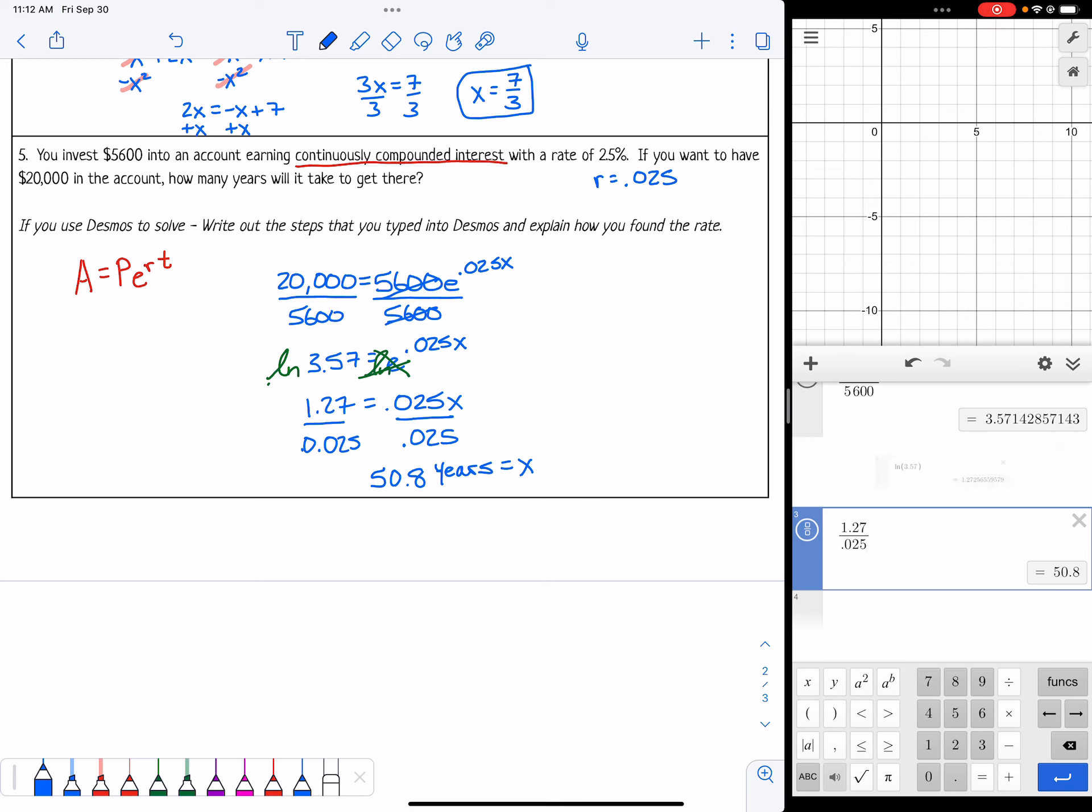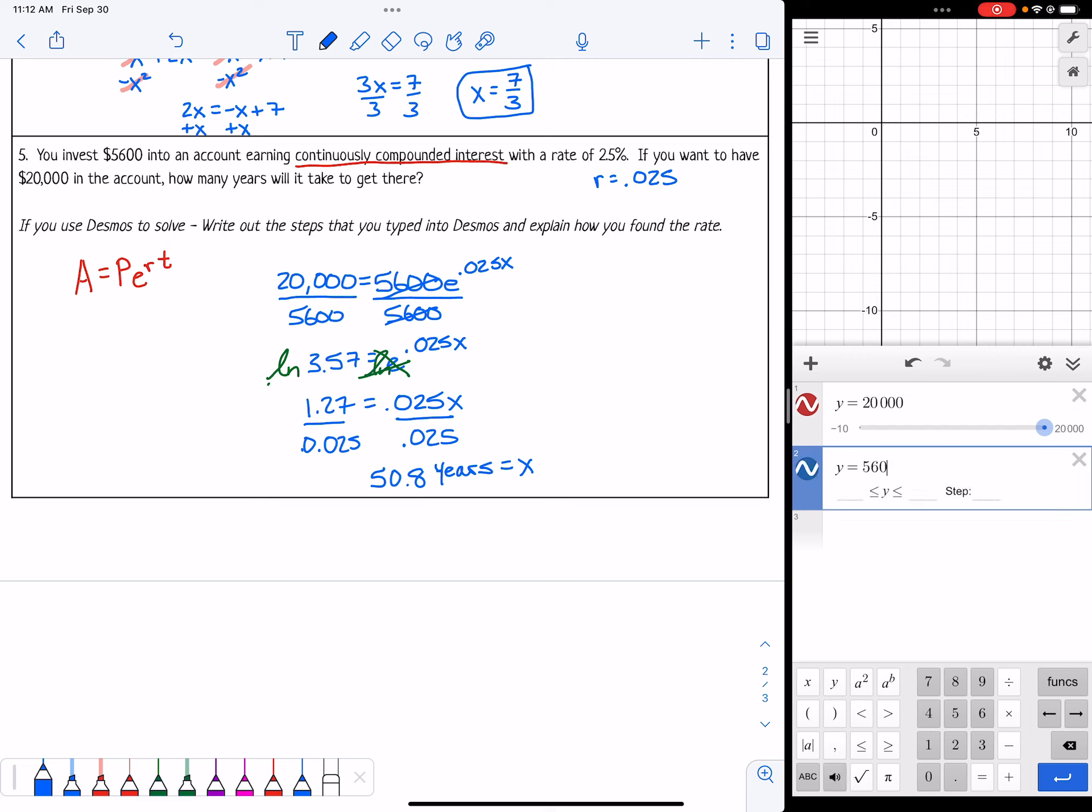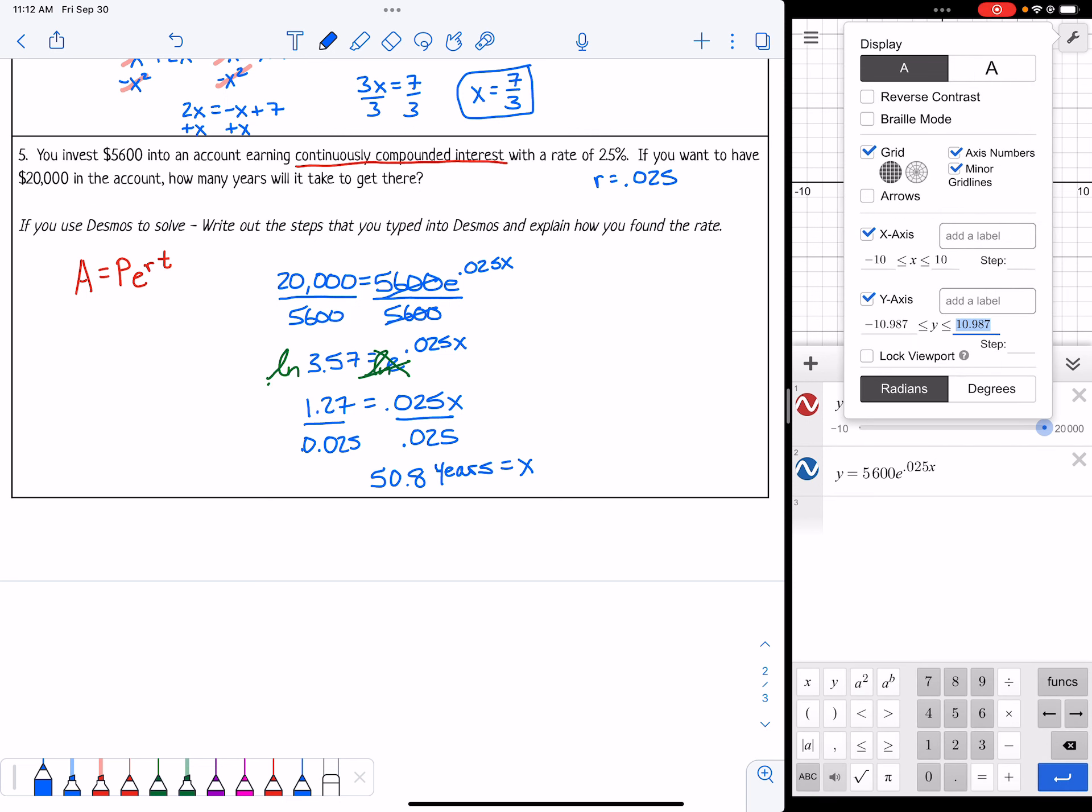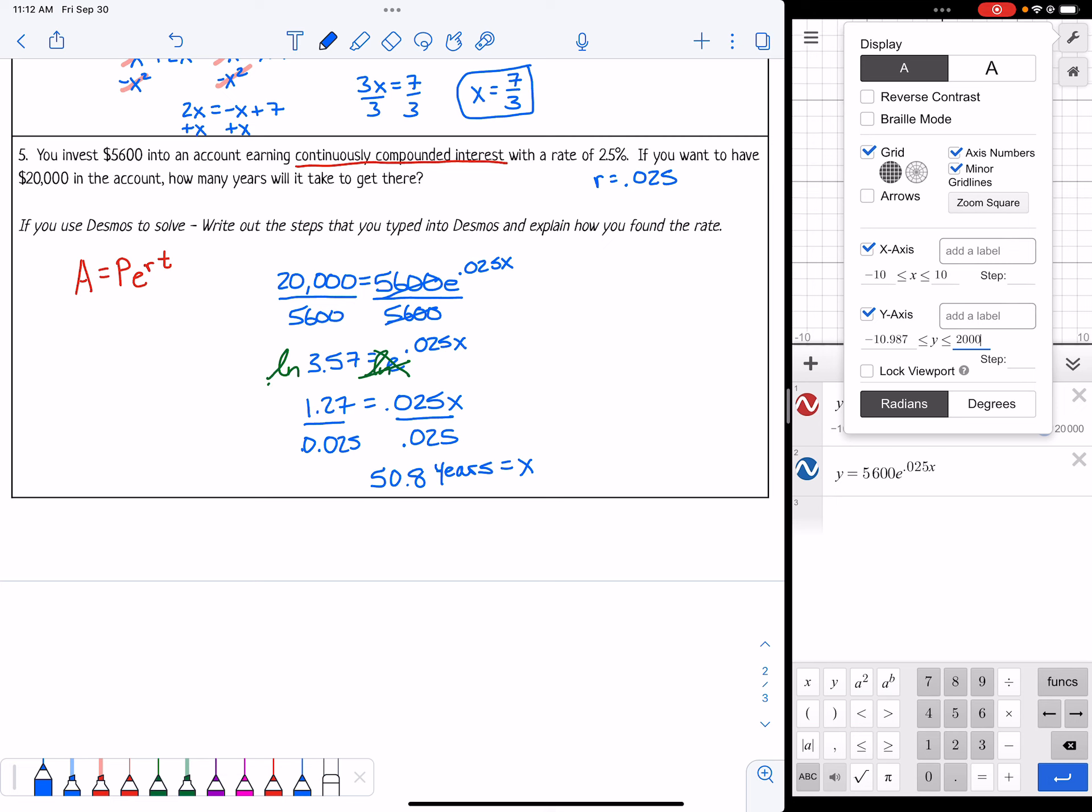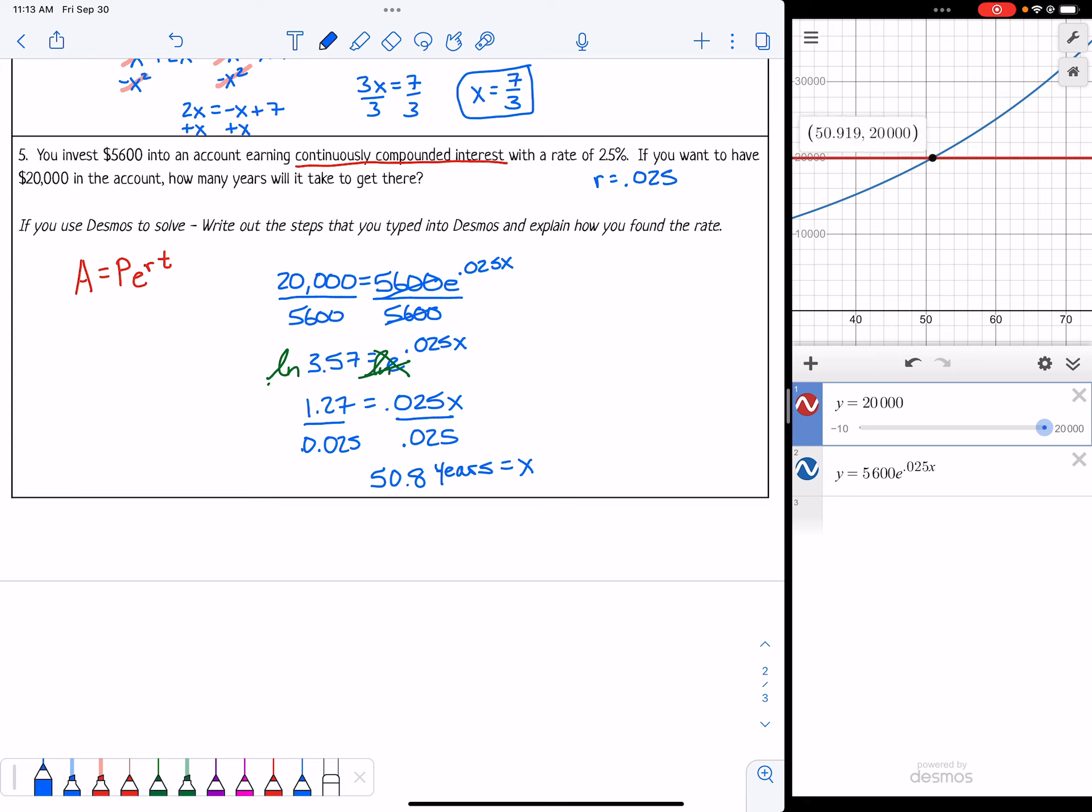You can check your answer for this one. You can type in any equation by typing in y equals what's on the left, so I have 20,000 on the left. Then y equals what's on the right, so that was 5,600 times e to the 0.025x. But I can't see it on the graph because 20,000 is way outside of my window. So I need to change my window and really just change that y maximum to be more like that largest number. Then I can scroll over and find it, and notice I get pretty much the same thing.